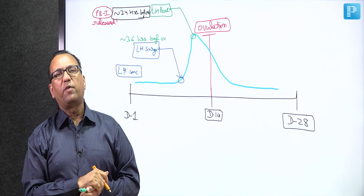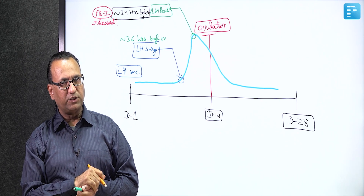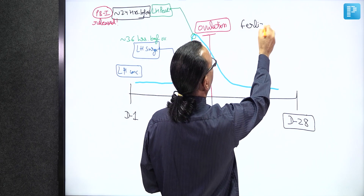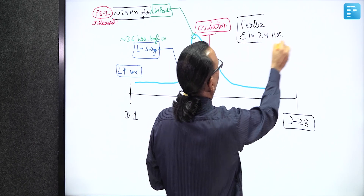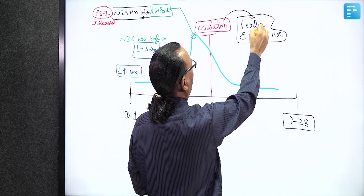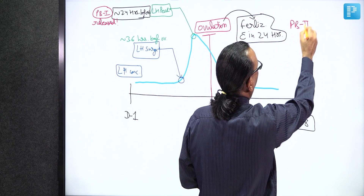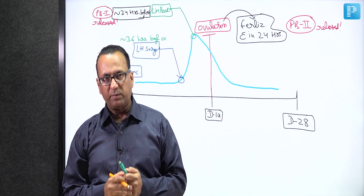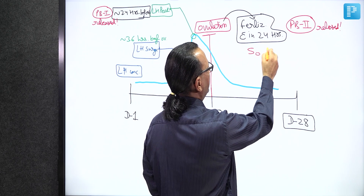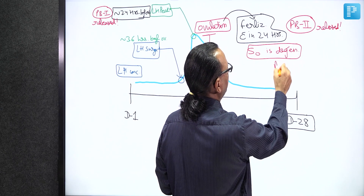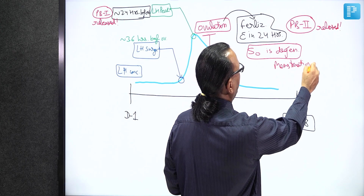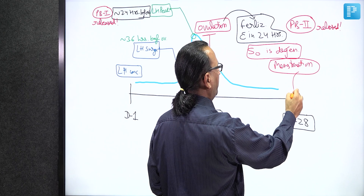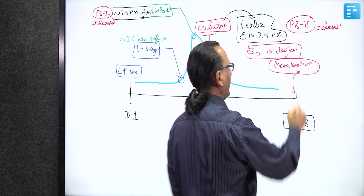The second polar body will be released after fertilization. Fertilization should occur within 24 hours of ovulation. However, this is very rare because usually sperms are not available in time, and the secondary oocyte undergoes degeneration and is lost with menstruation by the end of the cycle. If fertilization is desired, we must wait for the next cycle or ensure sperm availability around ovulation.